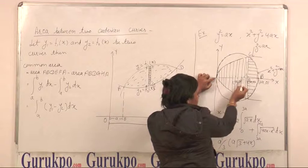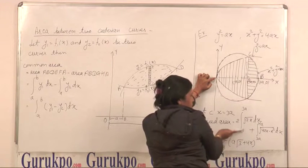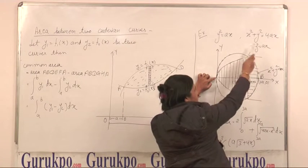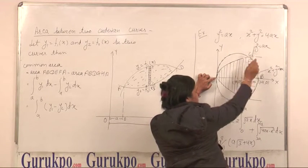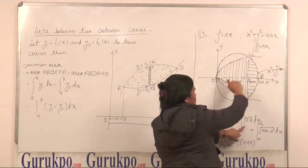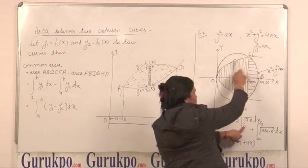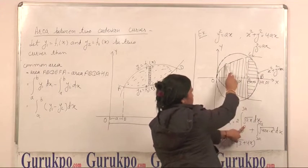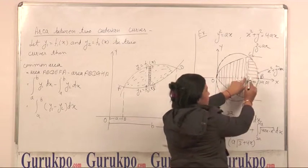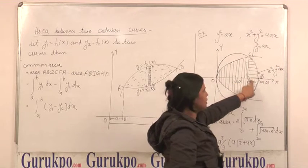You can see here that O, A, the limit is 0 to 3A because this is 0, this is 3A. The intersection point of these two curves is 3A. So, limit is from 0 to 3A. This is equation of the parabola because this common area is starting from this curve plus remaining portion is this. And here x limits are from 3A to 4A.